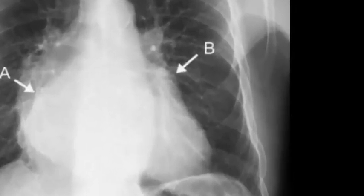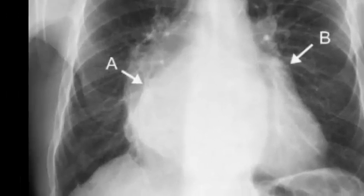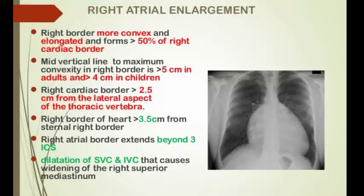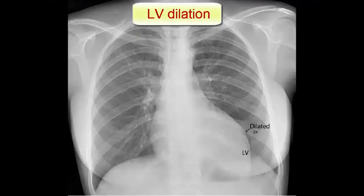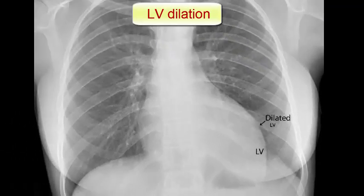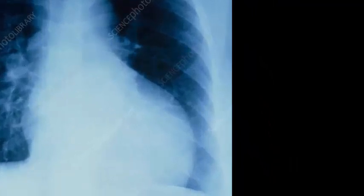Left atrial dilatation results in prominence of the left atrial appendage, creating the appearance of a straight left heart border, a double cardiac shadow to the right of the sternum, and widening of the angle of the carina as the left main bronchus is pushed upwards. Right atrial enlargement projects from the right heart border towards the right lower lung field. Left ventricular dilatation causes prominence of the left heart border and enlargement of the cardiac silhouette. Left ventricular hypertrophy produces rounding at the left heart border.